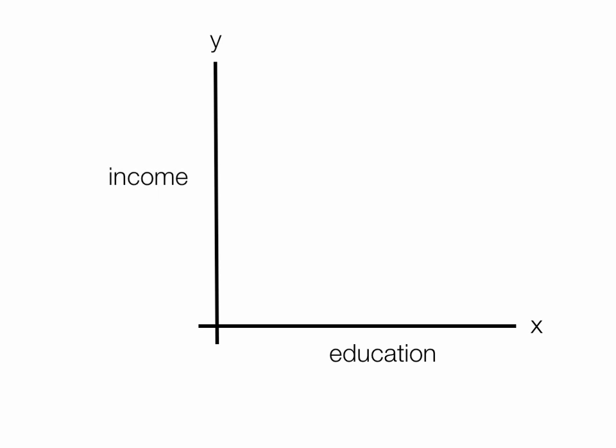Education and income. Education is the independent variable. The dependent variable is income. So let's say in this case, R is equal to plus 0.40.